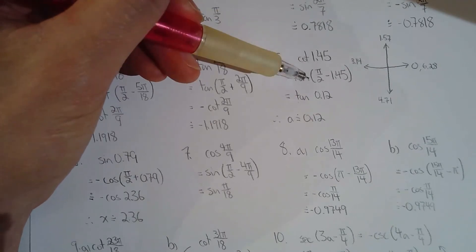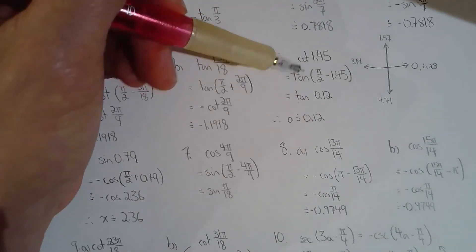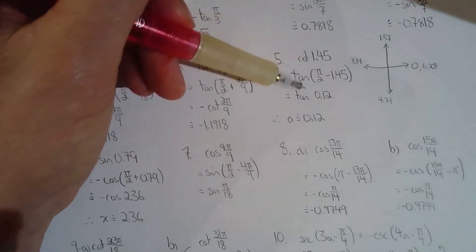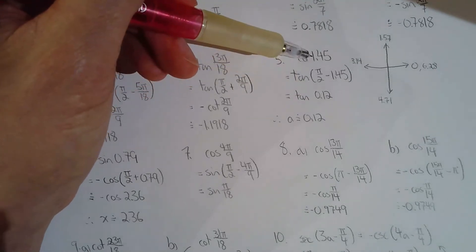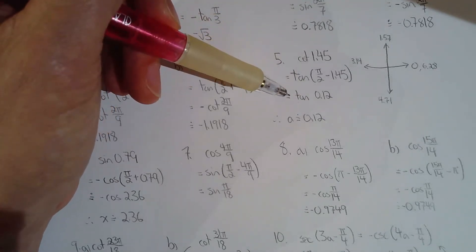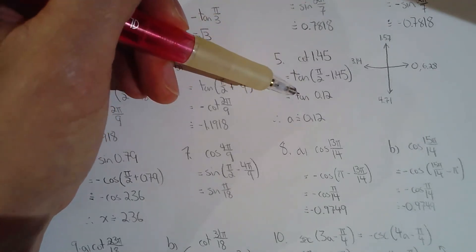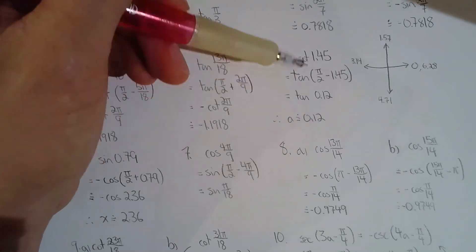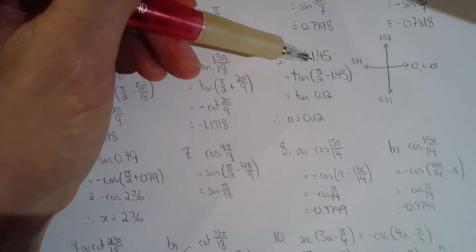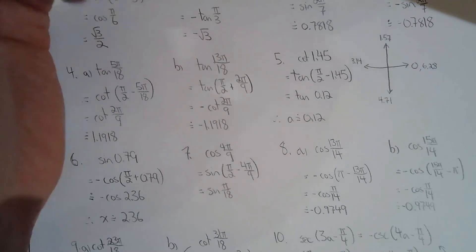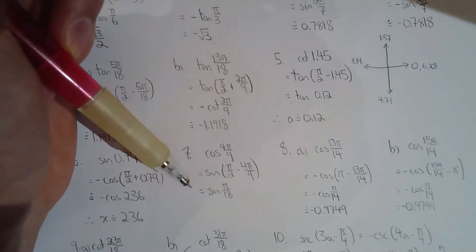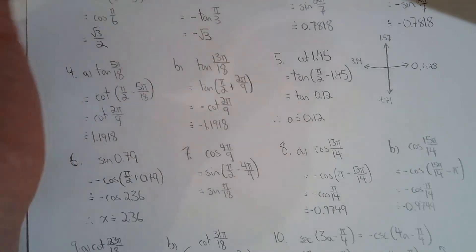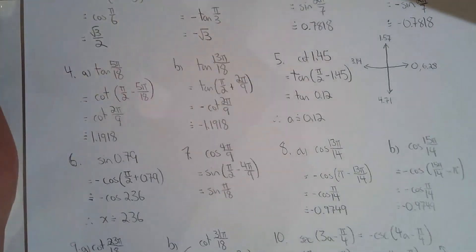In this question, I'm solving for an angle in the first quadrant where tan equals cotan(1.45). Taking the complementary angle, a is approximately 0.12, rounded to two decimal places.